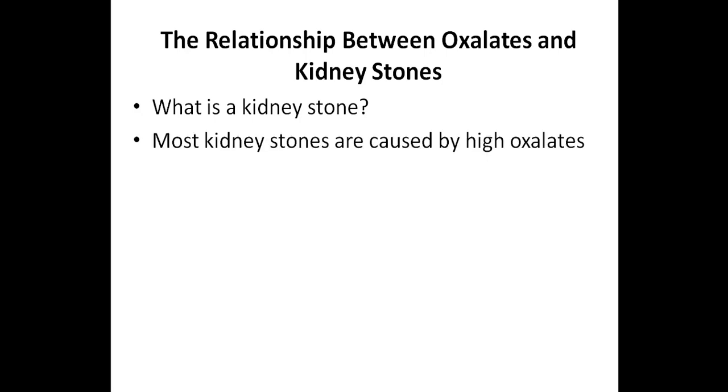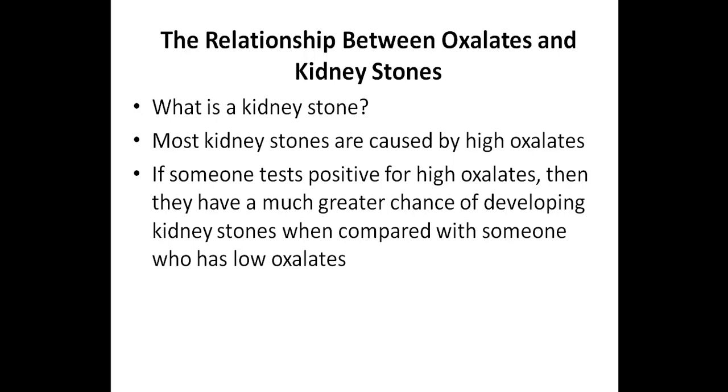I'd now like to briefly discuss the relationship between oxalates and kidney stones. A kidney stone is a hard mass that is developed from crystals that separate from the urine within the urinary tract. They are formed in the kidneys, and most will be produced and passed through the urinary tract without causing any symptoms. However, larger stones can cause problems, which is what happens when someone passes a stone. When someone develops a kidney stone, this usually is caused by high oxalates. This doesn't mean that everyone with high oxalates will develop kidney stones, but if someone tests positive for high oxalates, then they have a much greater chance of developing kidney stones when compared with someone who has low oxalates.